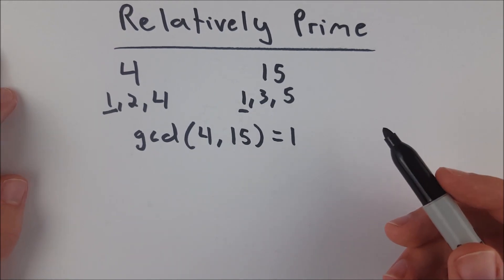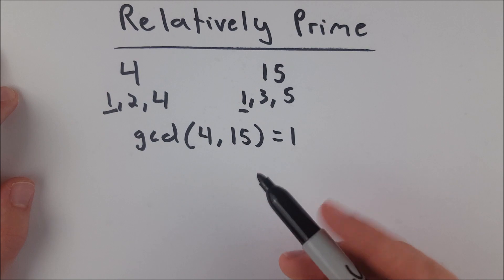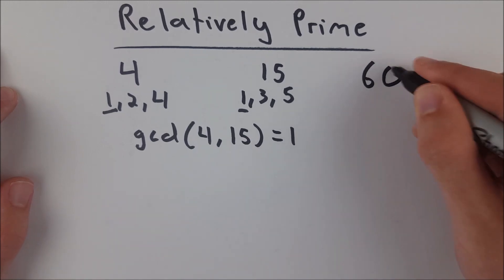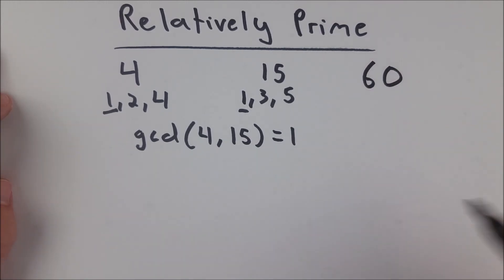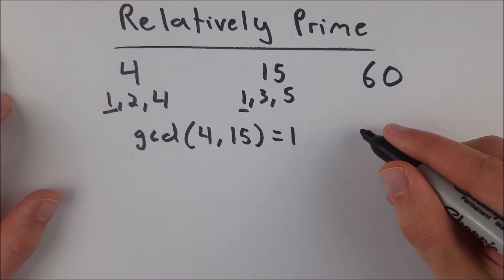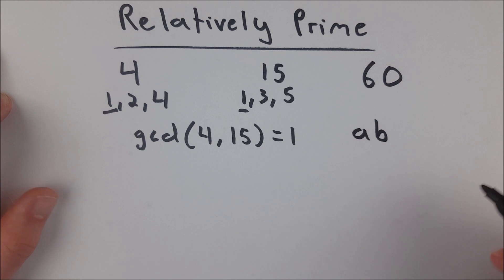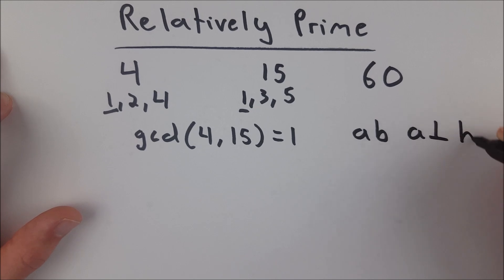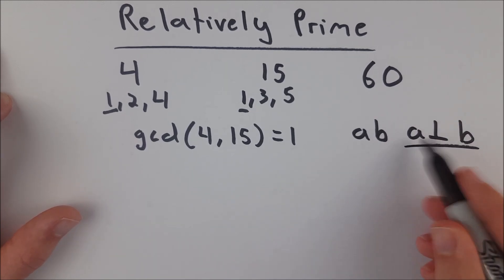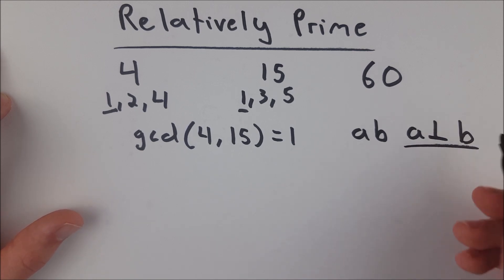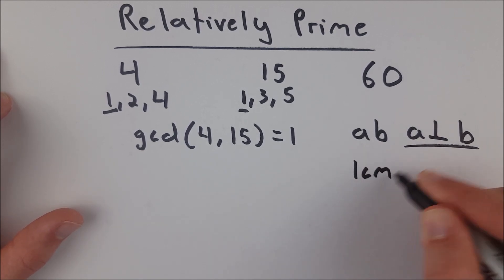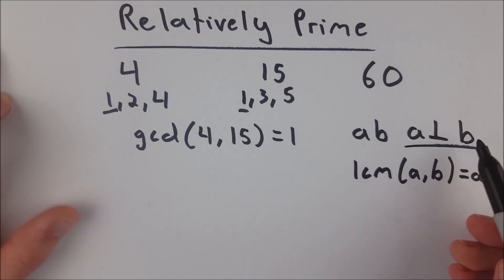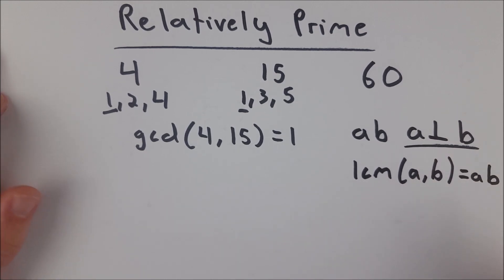This also means that their least common multiple would be the product of the two, which is 60. The smallest number that both four and 15 go into is 60, because it's their product. To recap: if two numbers a and b are relatively prime — sometimes written with the perpendicular sign — then the least common multiple of a and b is guaranteed to be their product a·b.